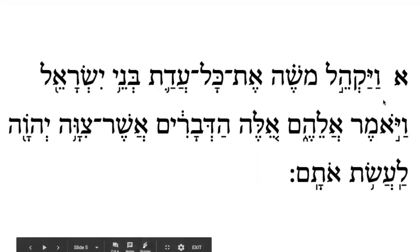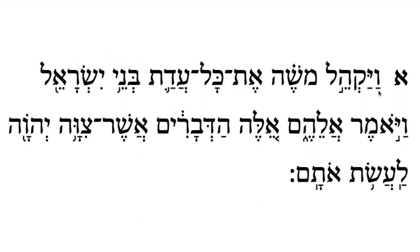The first letter of the first word is a vav with a patach, so this says 'vah.' Then a yud with a patach says 'ya' — so 'vah-ya.' Then a kuf; the shiva is silent in the middle of the word, so it's 'yak.' Then a he with a tzere and a lamed says 'hel' — making 'vayakhel,' which means 'and he assembled.'